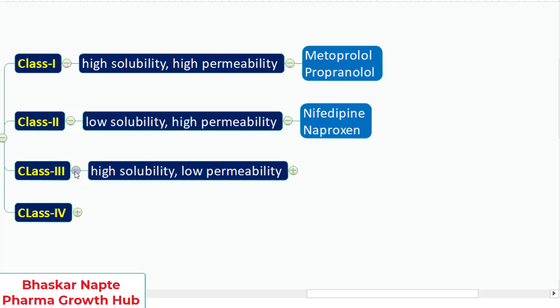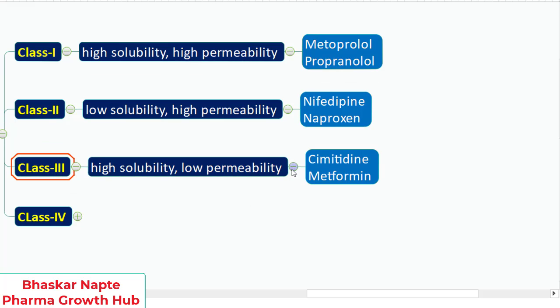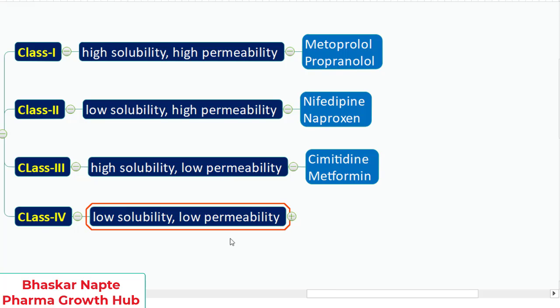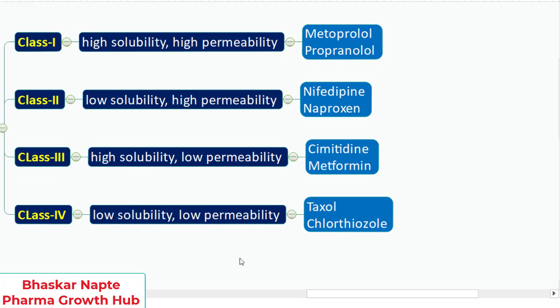BCS Class 3 drug substances are highly soluble but low permeable, such as cimetidine and metformin. Class 4 drug substances have low solubility as well as low permeability and are the most challenging to develop, with examples being Taxol and chlorothiazole. You must understand and explain the definition of each BCS class.